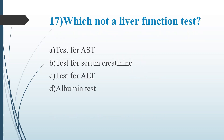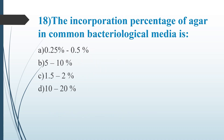Seventeenth question: Which is not a liver function test? Option A, test for AST. Option B, test for serum creatinine. Option C, test for ALT. Option D, albumin test. Answer is Option B, test for serum creatinine. It is a kidney function test. Others are liver function tests.